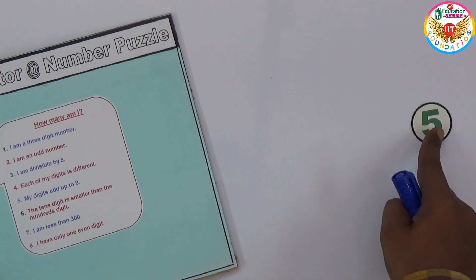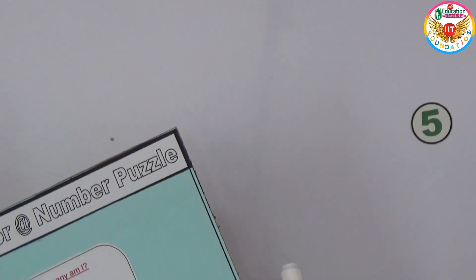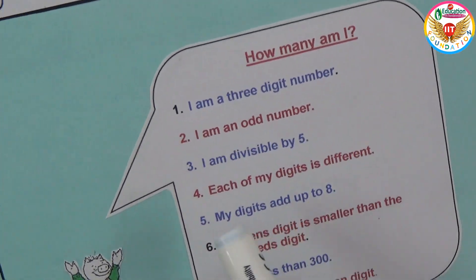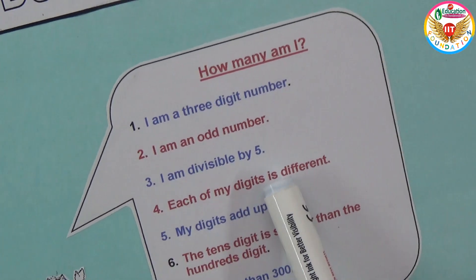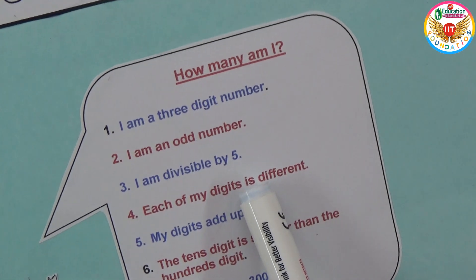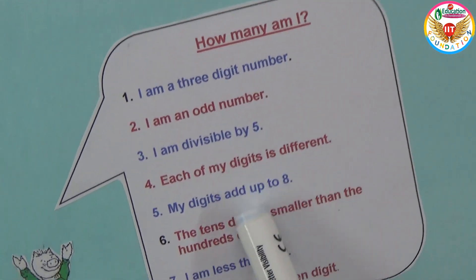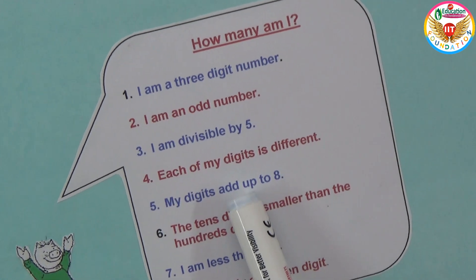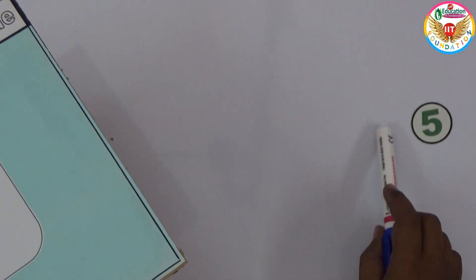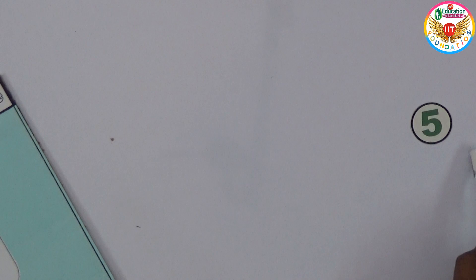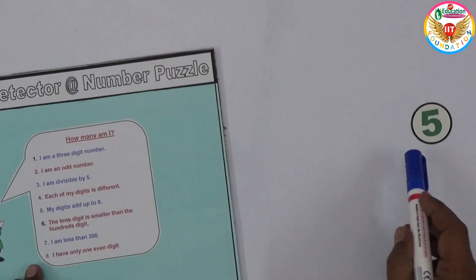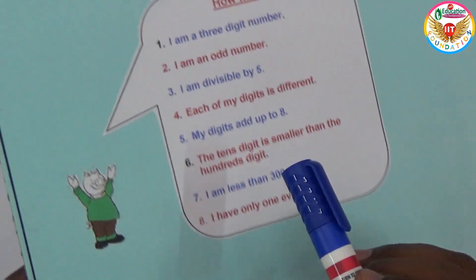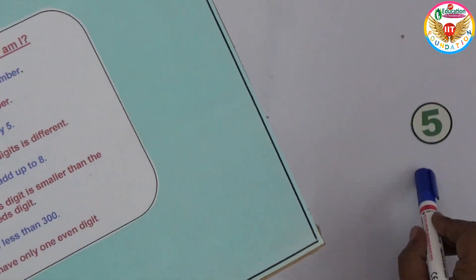Now, each of my digits is different, and my digits add up to 8. We already have 5 fixed in the units place. So the tens and hundreds digits together must add up to 3, since 8 minus 5 equals 3.